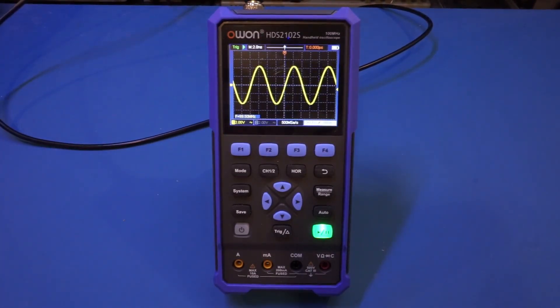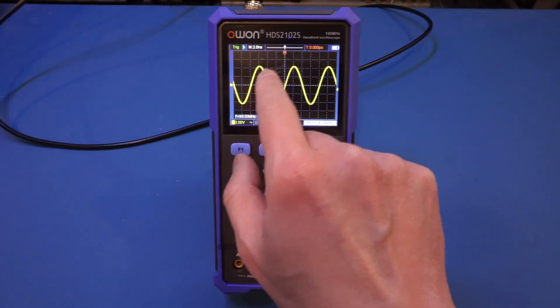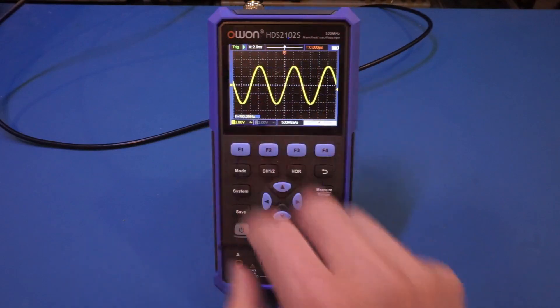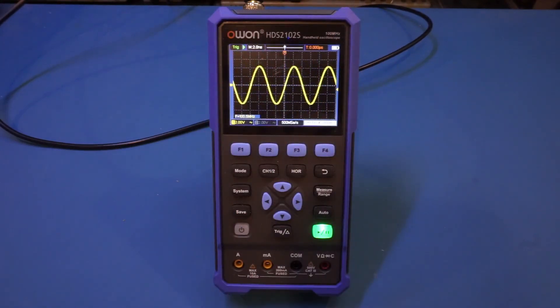But if you count the graticules on the oscilloscope, you will see that we are occupying one, two, three, four divisions horizontally.